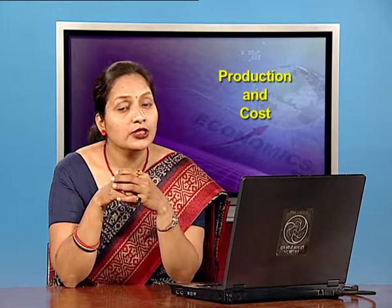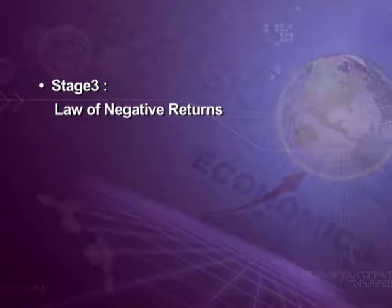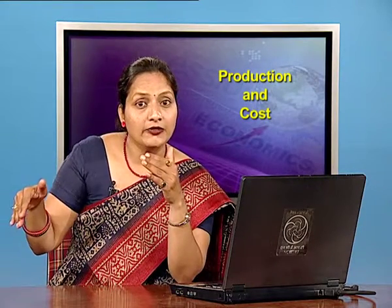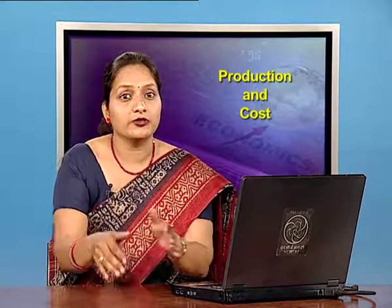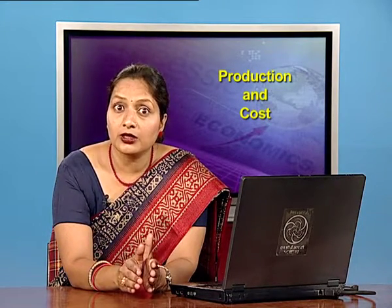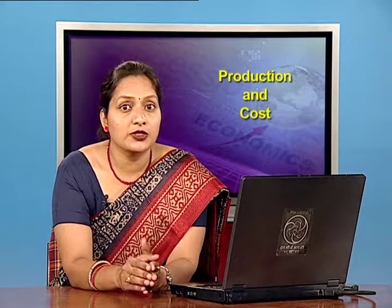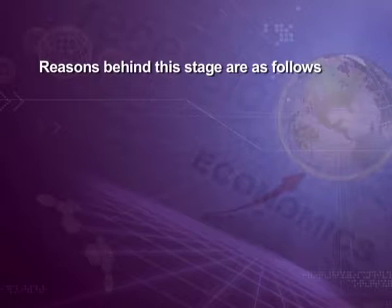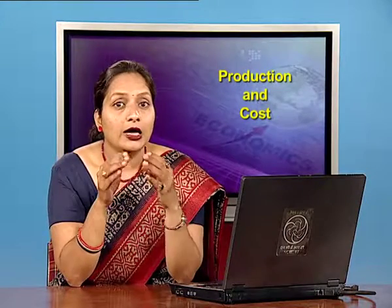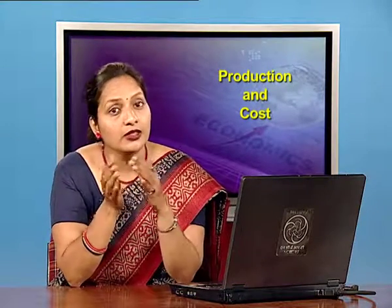Now comes stage three — the law of negative returns. In this stage, total product declines, marginal product becomes negative, and average product is diminishing but positive. This stage is called the stage of negative returns since the marginal product of the variable factor is negative during this stage. The reason is that quantity of the variable factor becomes too excessive relative to the fixed factor, so that they come in each other's way, with the result that total output falls instead of rising. A reduction in units of the variable factor can increase the total output.